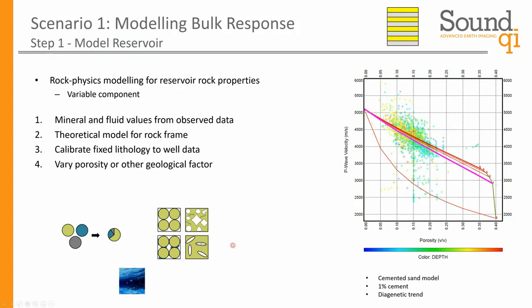The first step is to model the reservoir component using rock physics modeling for the sand. We input our mineral and fluid values, apply a theoretical model for our rock frame, and calibrate that with the well data. This shows the predicted P-wave velocity from the well calibrated against the well data itself. When we have our model, we can vary porosity or other geological factors — mineralogy, fluid saturation. In this case we're interested in varying porosity, so we've predicted P-wave velocity at a number of different porosities.